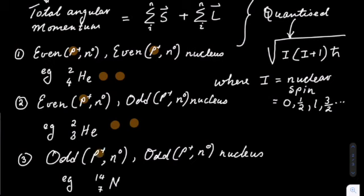Helium-4 has 2 protons and 2 neutrons. Helium-3 has 2 protons and 1 neutron. Nitrogen-14 has 7 protons and 7 neutrons.